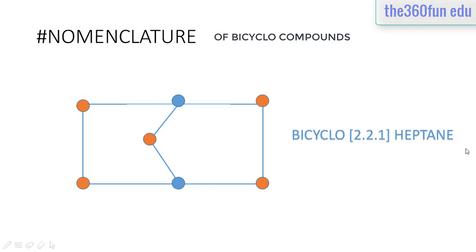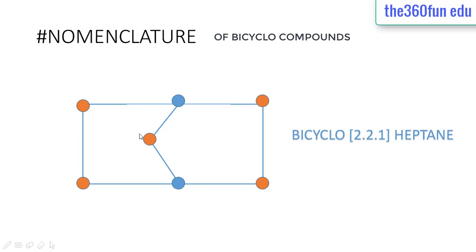The two atoms for the first part come from these two free carbons on one side, and the other two come from the two free carbons on the other side. The one corresponds to the single carbon present in the bridge between the two cycloalkane rings.